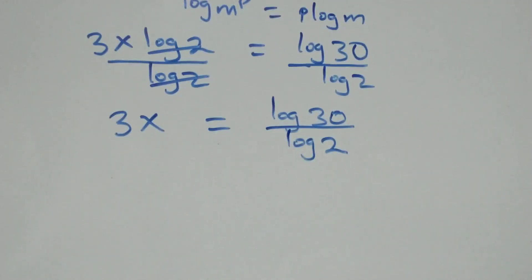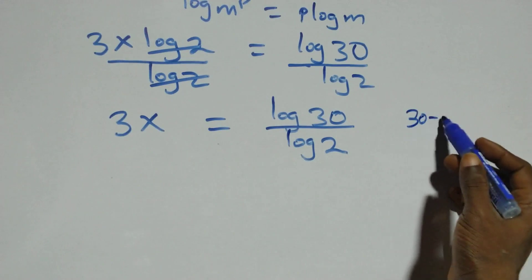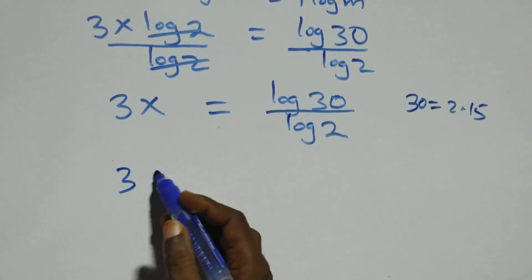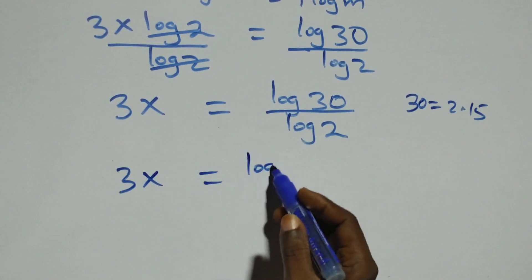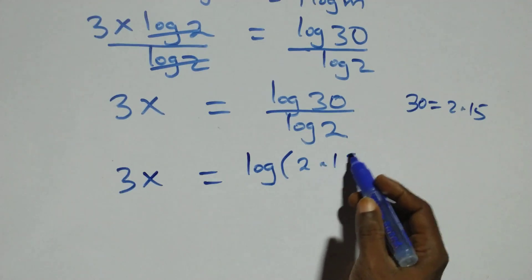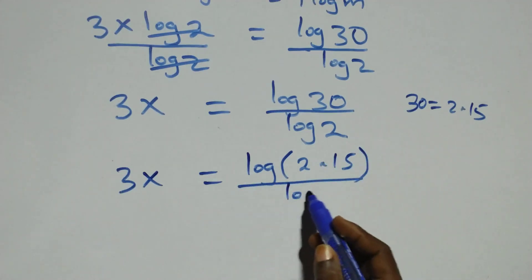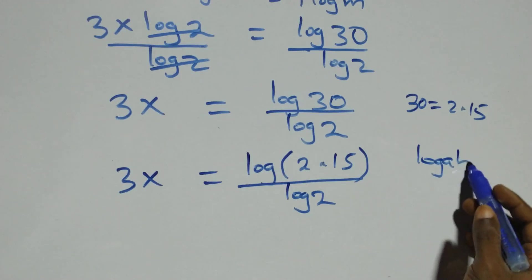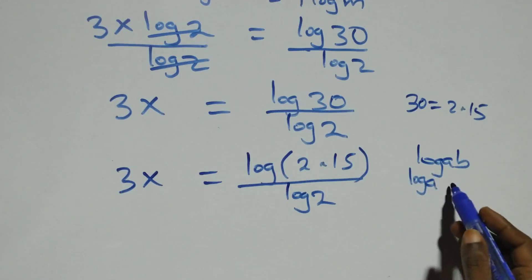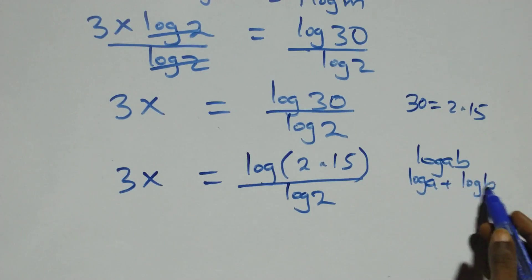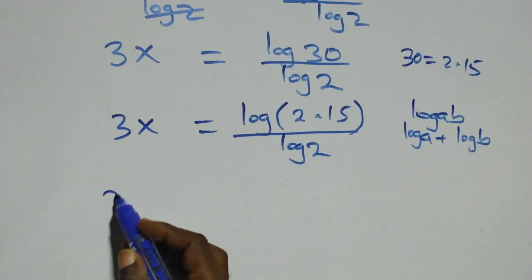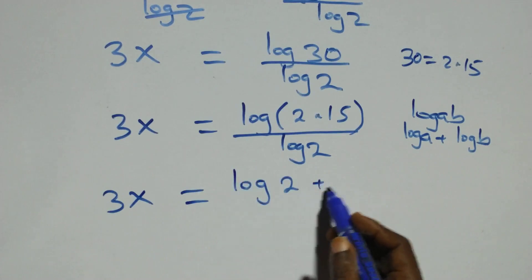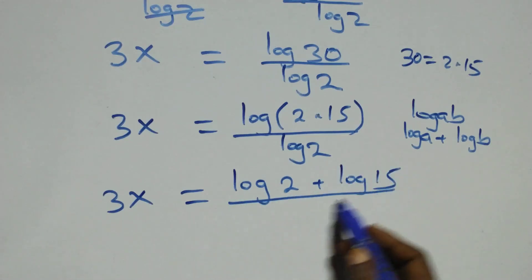We can factor two from thirty and write thirty as two times fifteen. This becomes three x equals log of two times fifteen, all over log two. This follows the logarithm product rule: log of a times b can be expressed as log a plus log b. So we have three x equals log two plus log fifteen, all over log two.